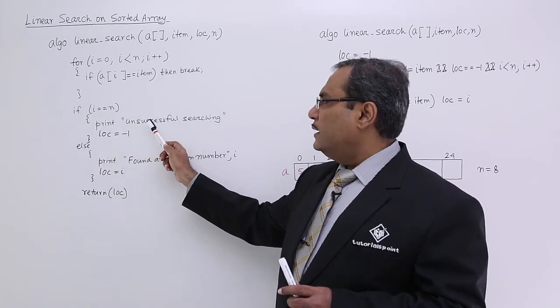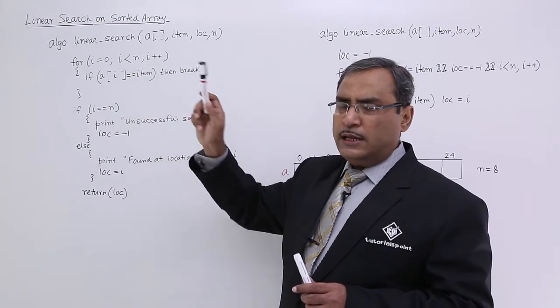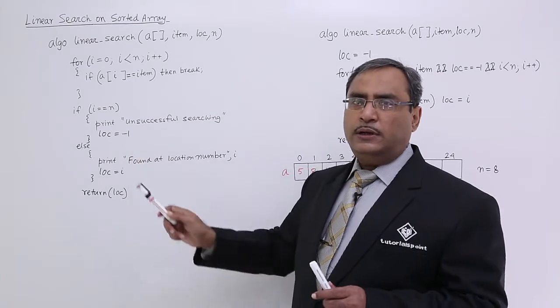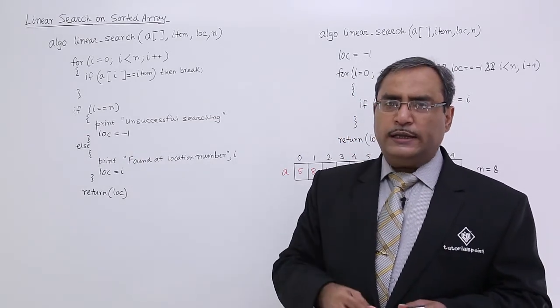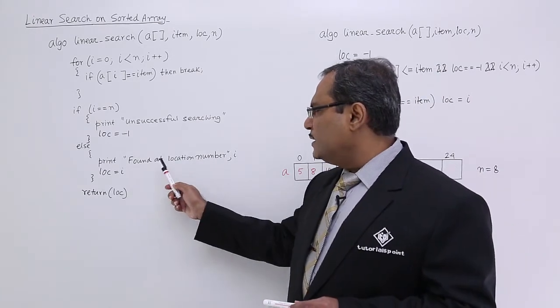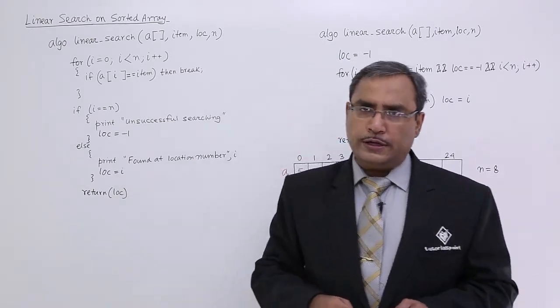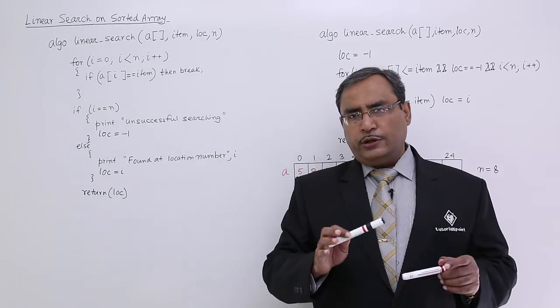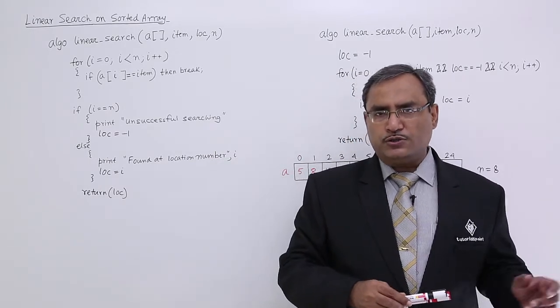So if i is equal to n, then unsuccessful searching because i has got the value n, meaning the loop got exhausted. Then I shall put lock is equal to minus 1, indicating unsuccessful searching because minus 1 is not a valid subscript in this particular array. Otherwise, found at location number i, lock is equal to i and lock will be returned. That algorithm we discussed in our previous video, so I request you all to please watch the previous video so you can get the continuation of this one.